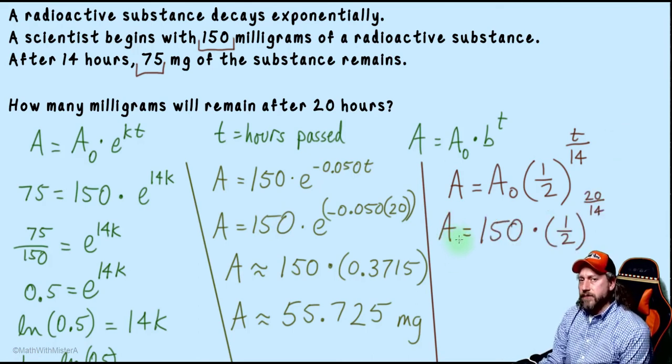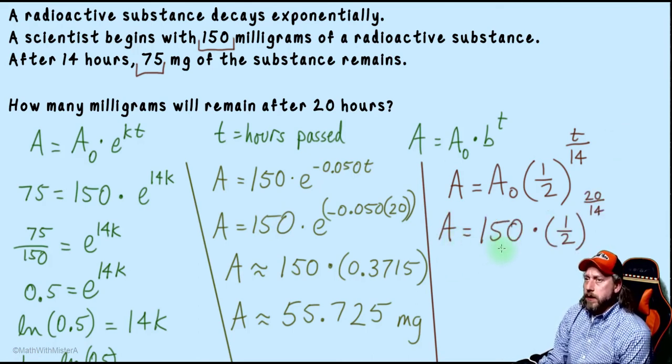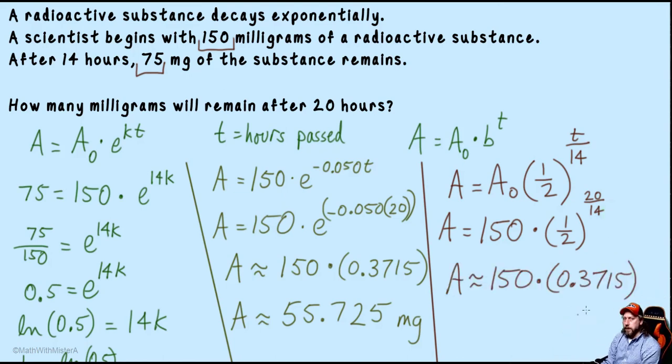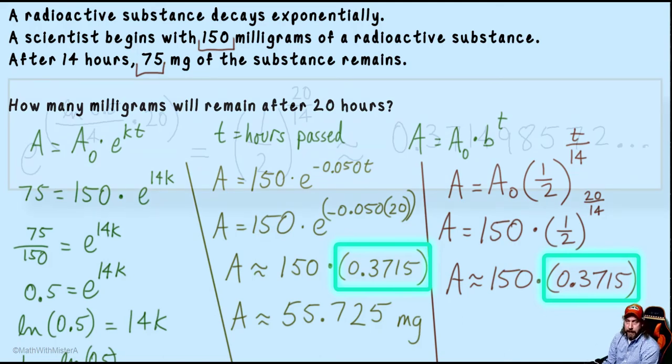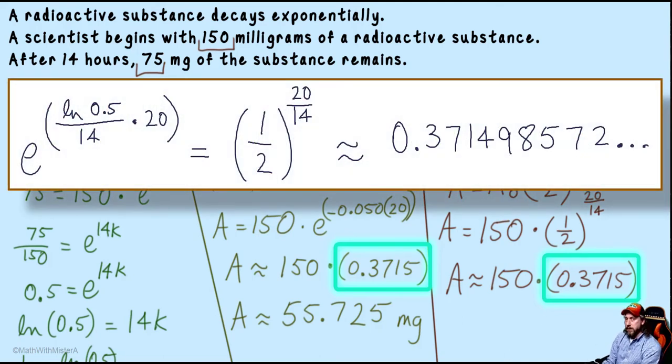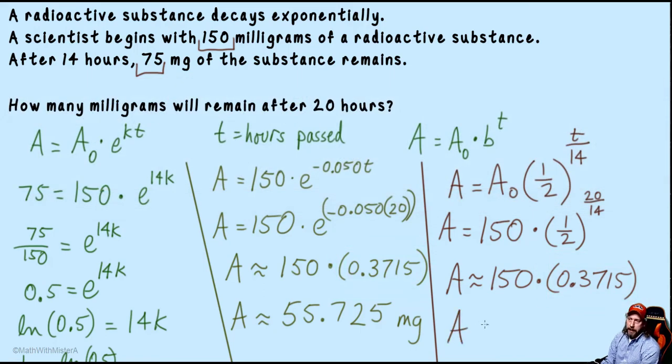To find out the amount left after 20 hours, that would be our original amount, 150, times one-half with the exponent 20 fourteenths. Again, I'll pause before multiplying that exponential expression to our original amount and see that we're going to be multiplying by again this 0.3715 number. And if you've had it calculated out, you'll see it's exactly the same number. So when we multiply by that times 150, we get a matching result.